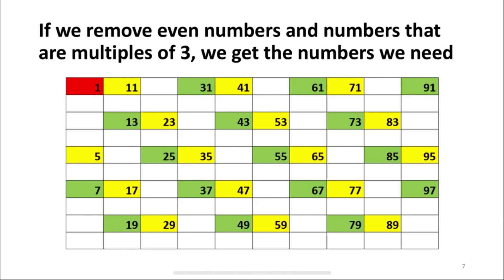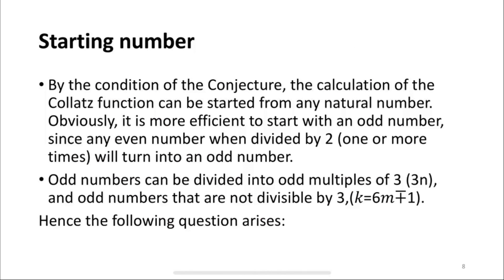If we remove even numbers and numbers that are multiples of 3, we get the numbers we need. By the condition of the conjecture, the calculation of the Collatz function can be started from any natural number. It is more efficient to start with an odd number, since any even number when divided by 2 one or more times will turn into an odd number. Odd numbers can be divided into odd multiples of 3 (3n) and odd numbers not divisible by 3, where k equals 6m minus or plus 1.